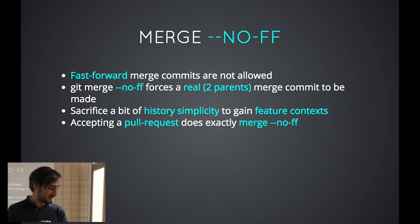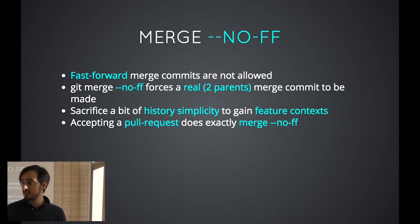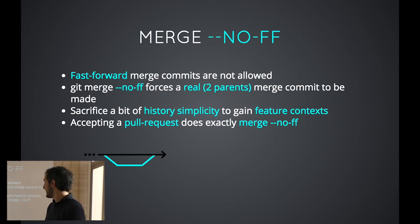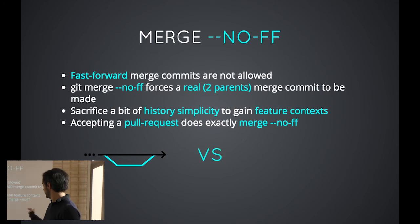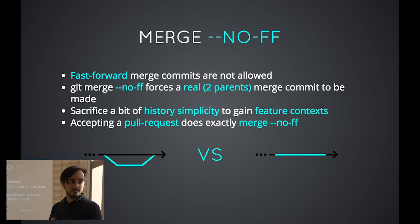Accepting a pull request, if you didn't know, does exactly that. When you do a feature with a pull request, even if it's possible to make a fast-forward commit, GitHub explicitly makes a NoFF merge commit. Here you can see a merge commit with NoFF, and just on the right, a commit with a fast-forward merge commit.